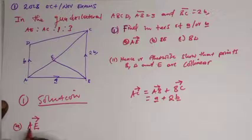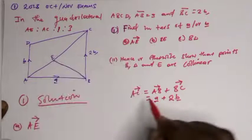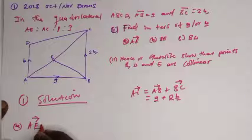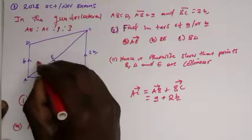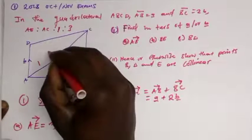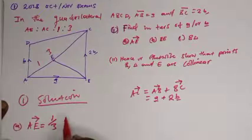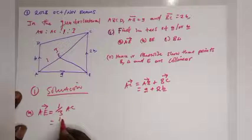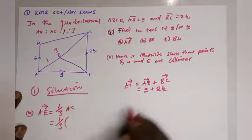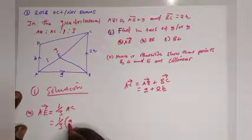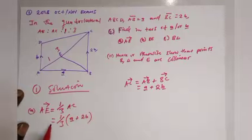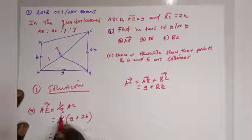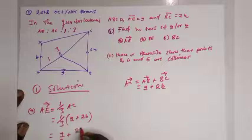Now vector AE equals one-third of AC, because AE is 1 and the whole line AC is 3. So AE = (1/3)AC = (1/3)(a + 2b), which gives us a/3 + 2b/3.